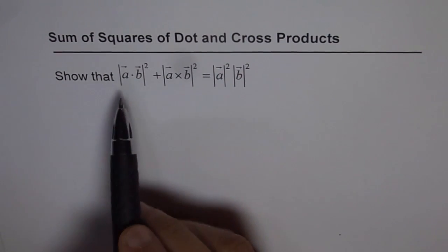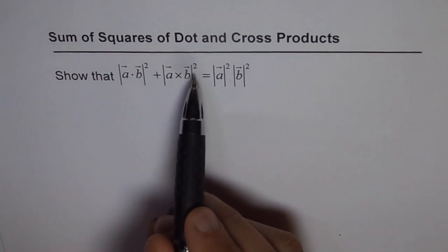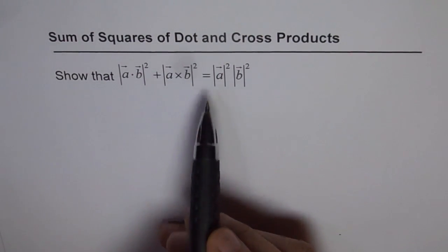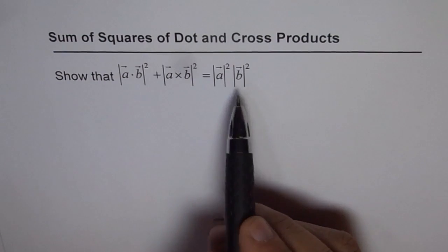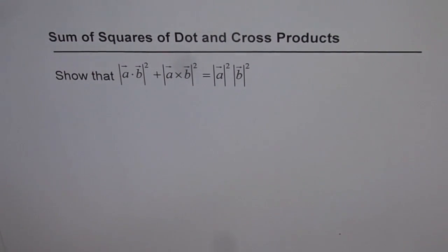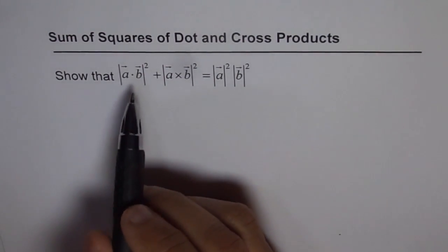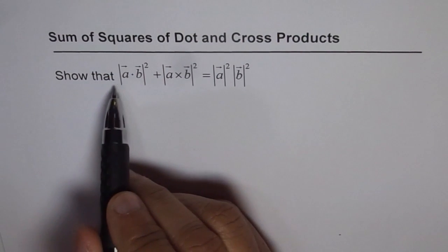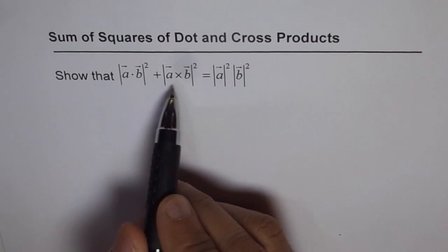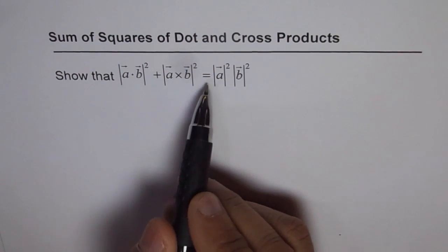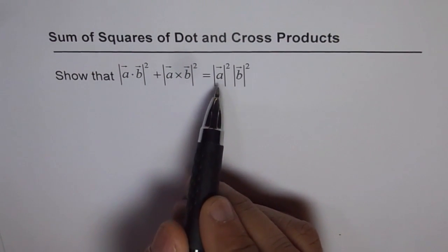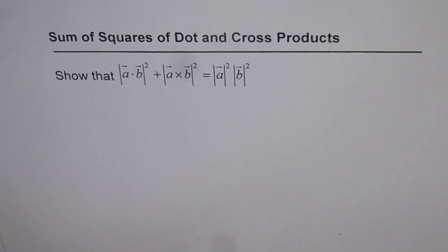Show that square of dot product plus square of cross product equals to product of squares of the magnitude of two vectors. So that is the kind of question we have. It says show that A dot B magnitude square plus A cross B magnitude square equals to magnitude of A square times magnitude of B square.